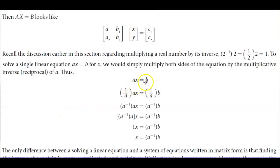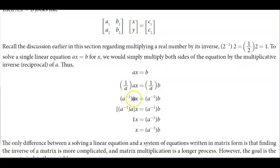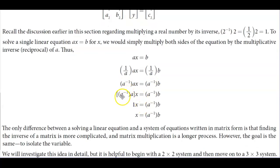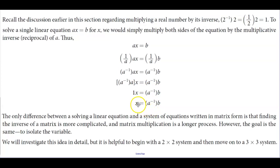AX is equal to B is the same thing as 1 over A times AX, which is equal to 1 over A times B. 1 over A is the same thing as A inverse times AX, which is equal to A inverse times B. Notice that A inverse times A is going to give you 1. So, we have 1X, which is equal to A inverse B, and therefore X is going to equal A inverse times B.